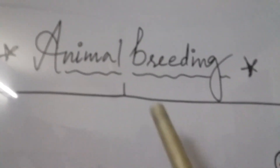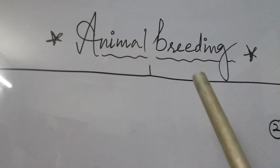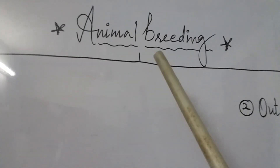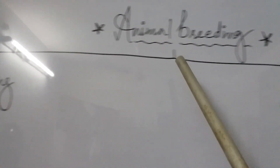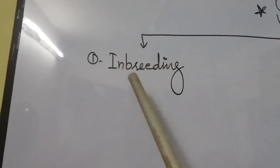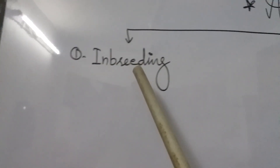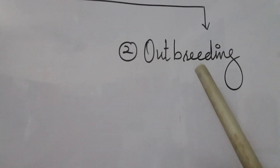Animal breeding can be of two types. Type number one is inbreeding, and type number two is outbreeding.